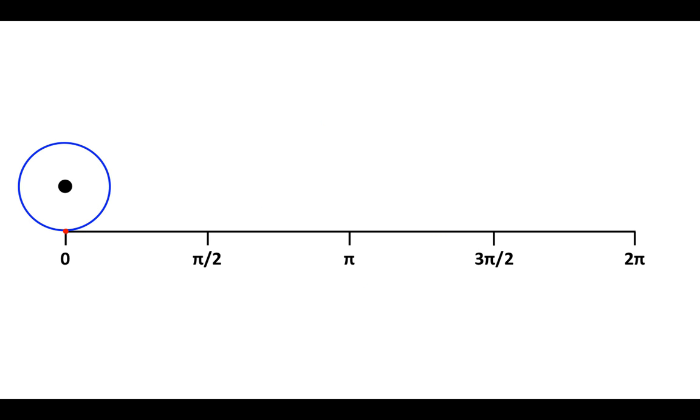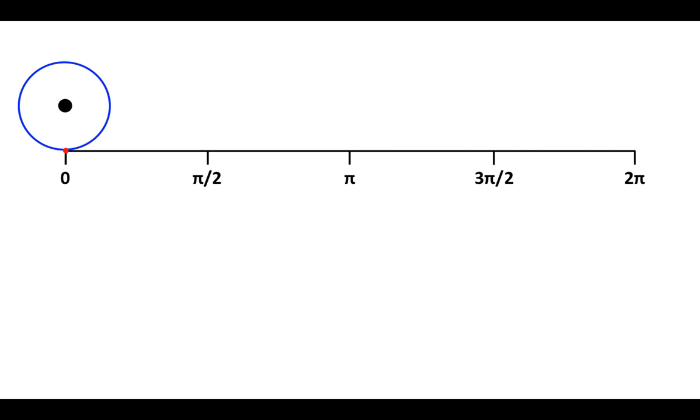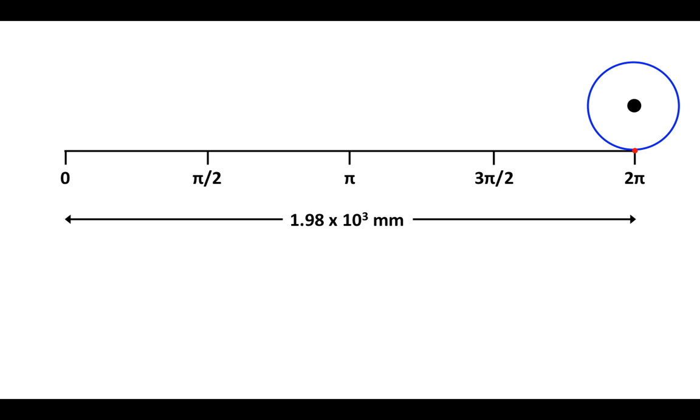Here we see the wheel in its starting position, and we're going to roll it to the right, ending with the red dot at the bottom, which is where it was one revolution ago. If my rim has a diameter of 630mm, then the circumference is π times the diameter, and that gives me 1.98×10³ millimeters. So as the wheel rolls from that point to that point, the distance traversed will be 1.98×10³ millimeters.